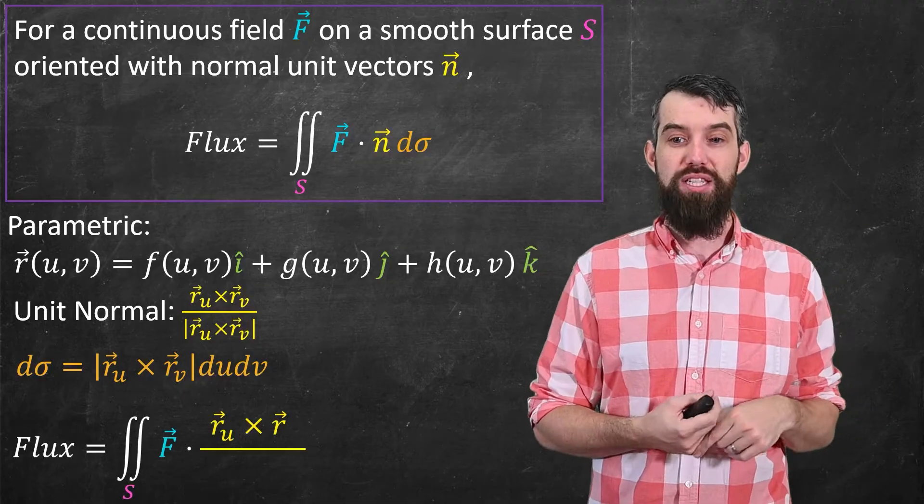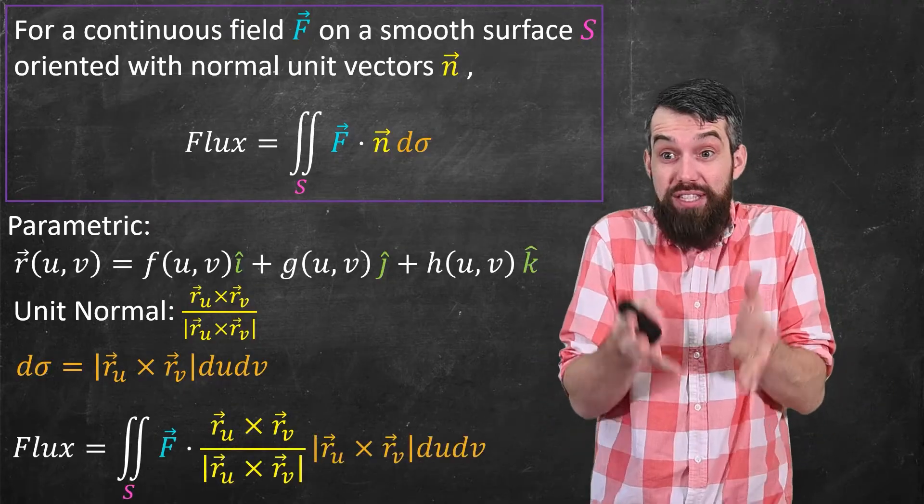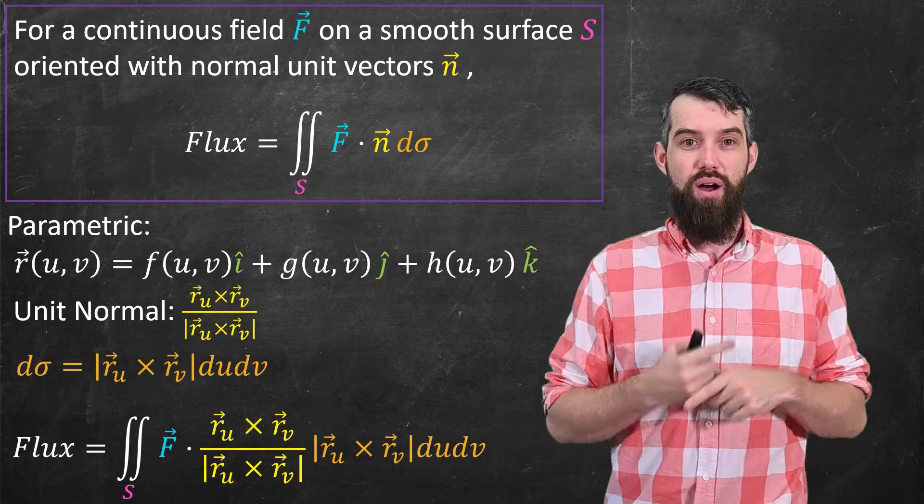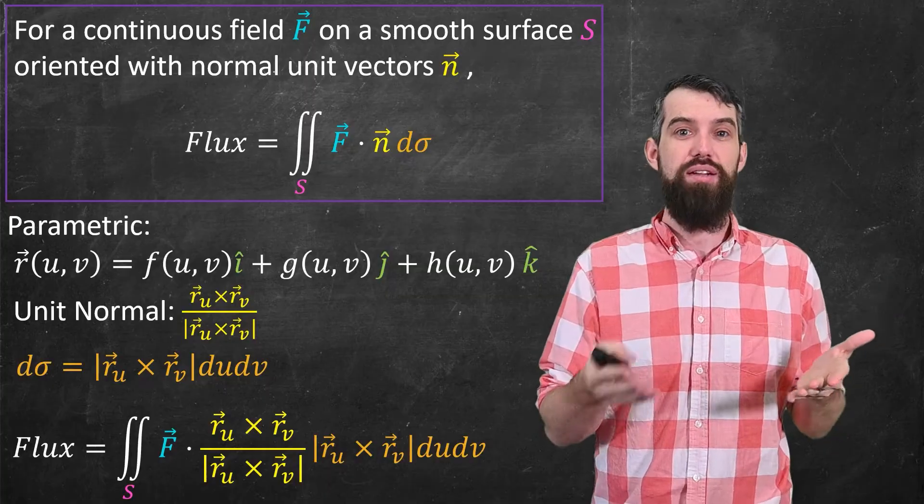So putting this all together, what is the flux? It's the f dot n I've substituted in the unit normal that I just talked about. And then the d sigma is being replaced by the r u cross r v, its length, du dv as well.